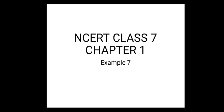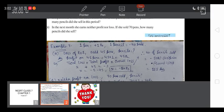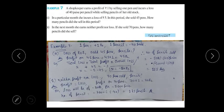Hello everyone, I am back with a new video. This is Chapter 1, Example 7. This is a very good and tricky question, so let's start and discuss it. The question is: a shopkeeper earns a profit of 1 rupee by selling one pen, and incurs a loss of 40 paisa per pencil while selling pencils from her old stock.